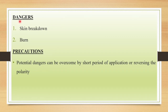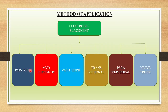Coming to the dangers, skin breakdown and burns are dangers associated with diadynamic current. These can be overcome by short period of application or reversing the polarity. The methods of application depend upon the electrode placement and include pain support application, myo-energetic application, vasotropic application, trans-regional application, paravertebral application, and nerve trunk applications.